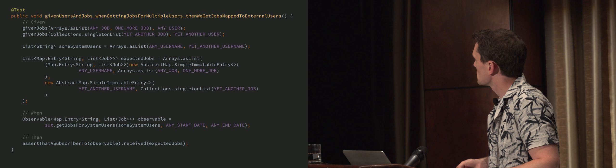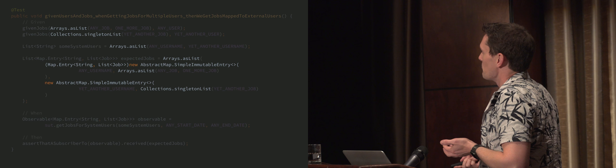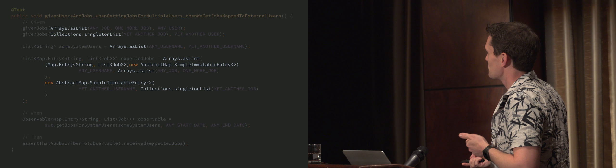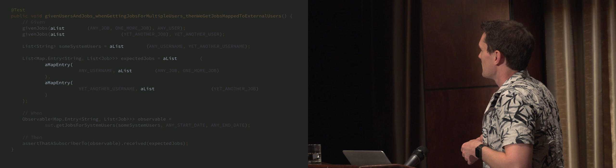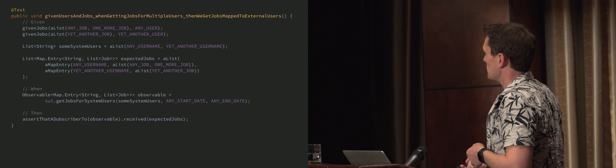We can simplify this — change this around so we can say that a subscriber to that observable will have received these things, and we can use that in every single Rx thing that we're testing. All this stuff is incredibly noisy. Whoever wrote this took the consideration that the list for the first one needs to be a list, but then the second thing only has a single item so they used singleton list — as if that matters in a test. This is just adding all sorts of confusion and noise, especially with all the generics. We can get rid of all of that and just introduce simple little methods that do exactly what those things did.